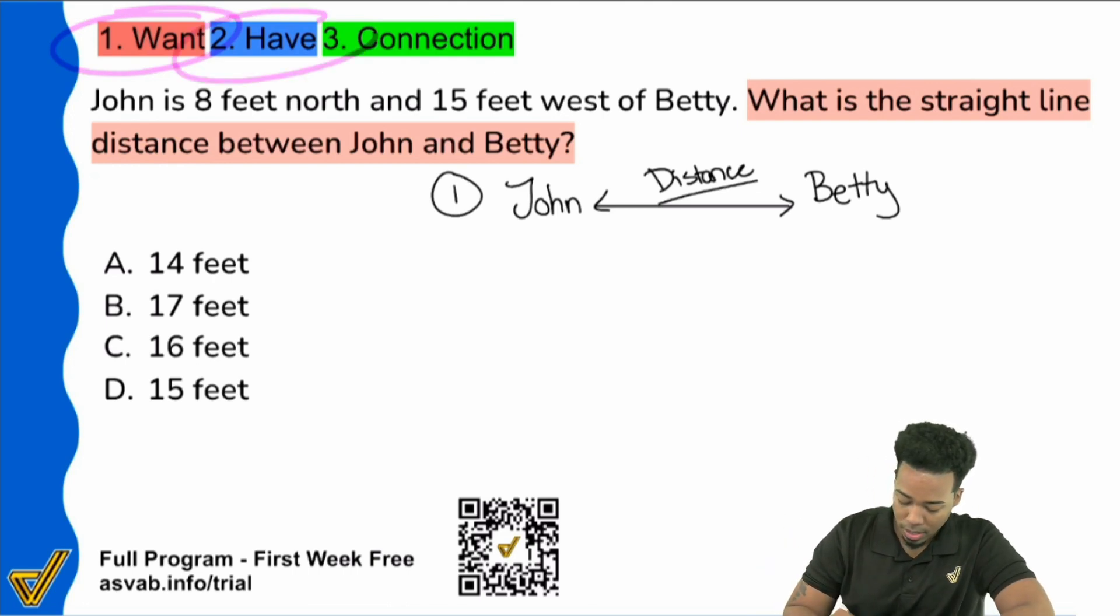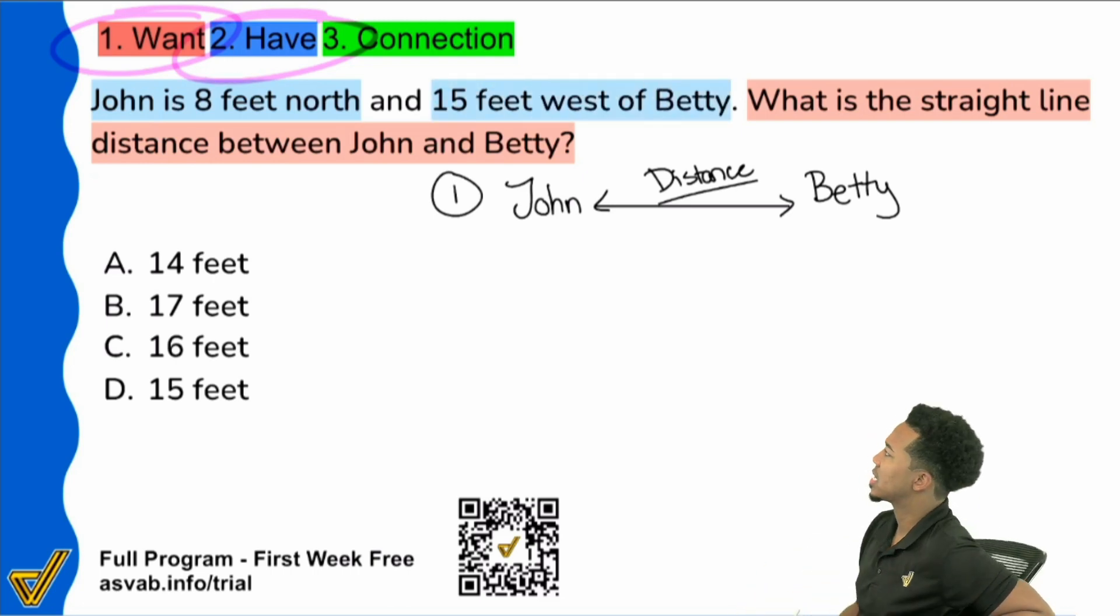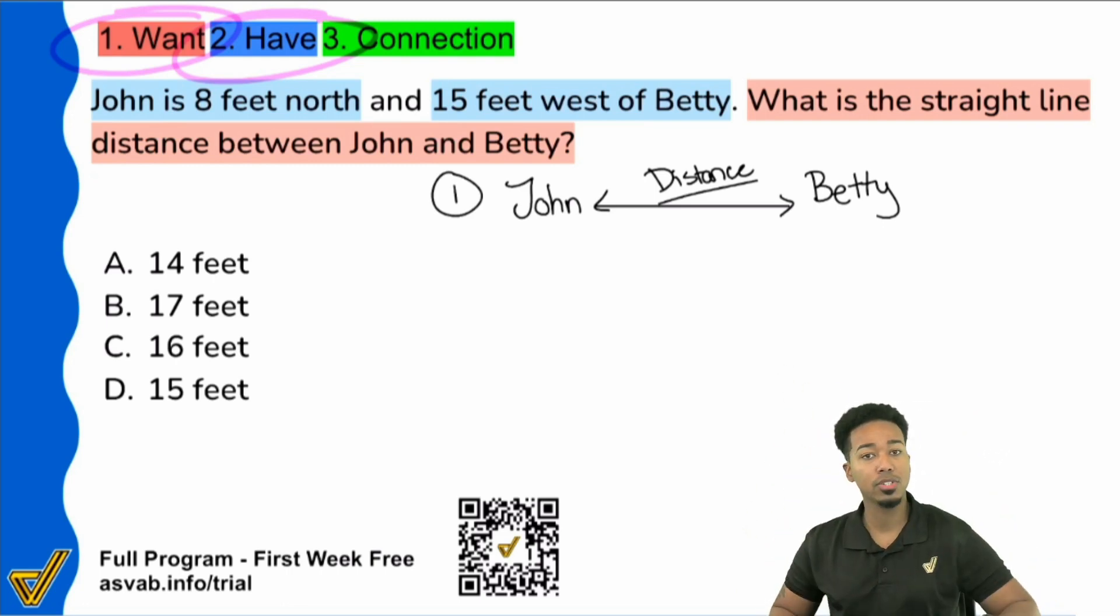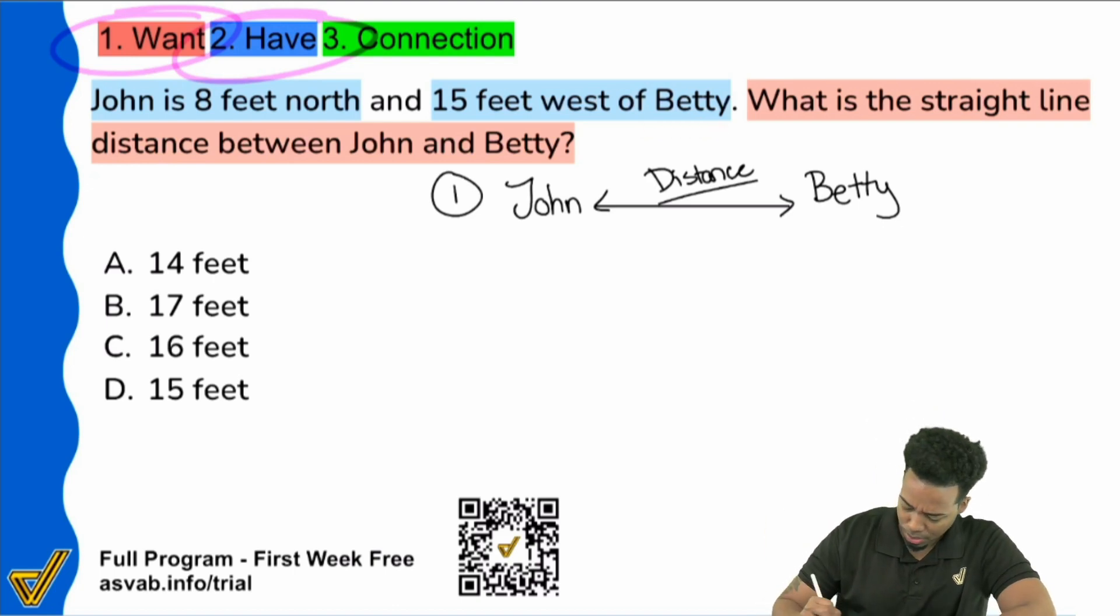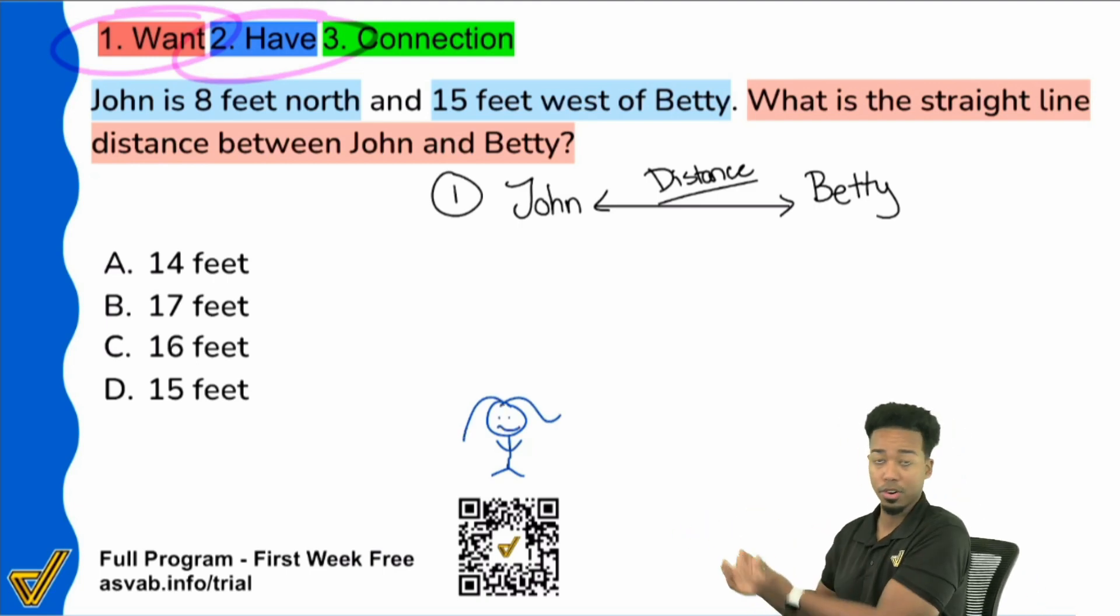Next up, we're going to turn ourselves to the information we have. It says John is eight feet north and 15 feet west of Betty. So it looks like they might be in different positions. Let me show you exactly what this means. Let's start with Betty. I'm going to draw Betty and say Betty is this blue character over here. There's Betty. I am the world's best artist.